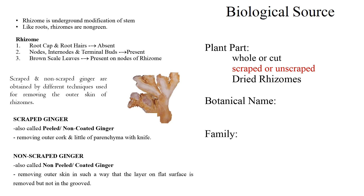Non-scrapped ginger is obtained by removing the outer skin in such a way that the layer on the flat surface is removed but not in the grooves. Coming to the botanical name: the botanical name of the plant is Zingiber officinale. It belongs to the family Zingiberaceae.